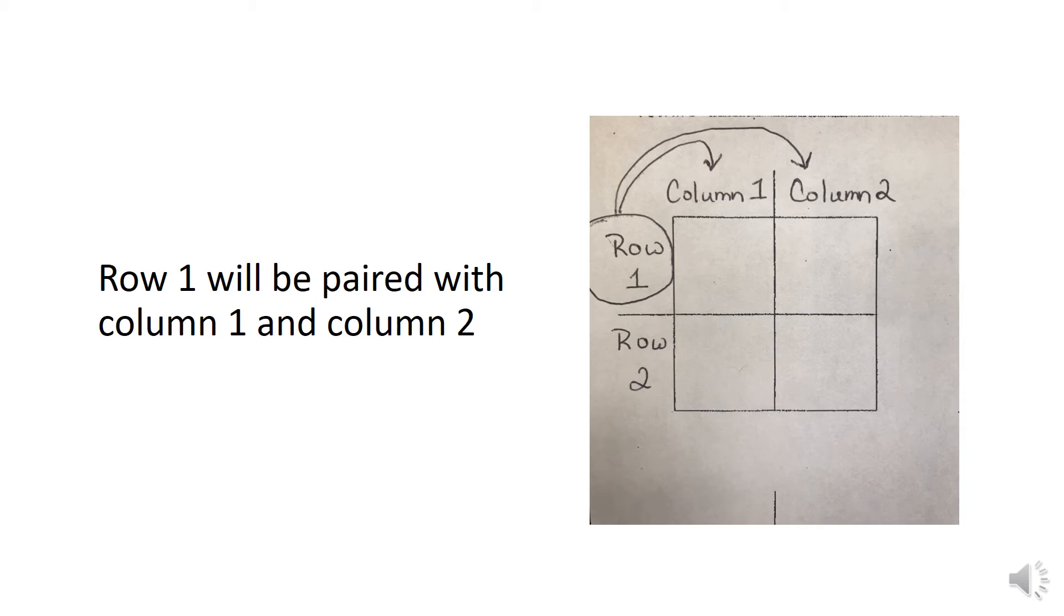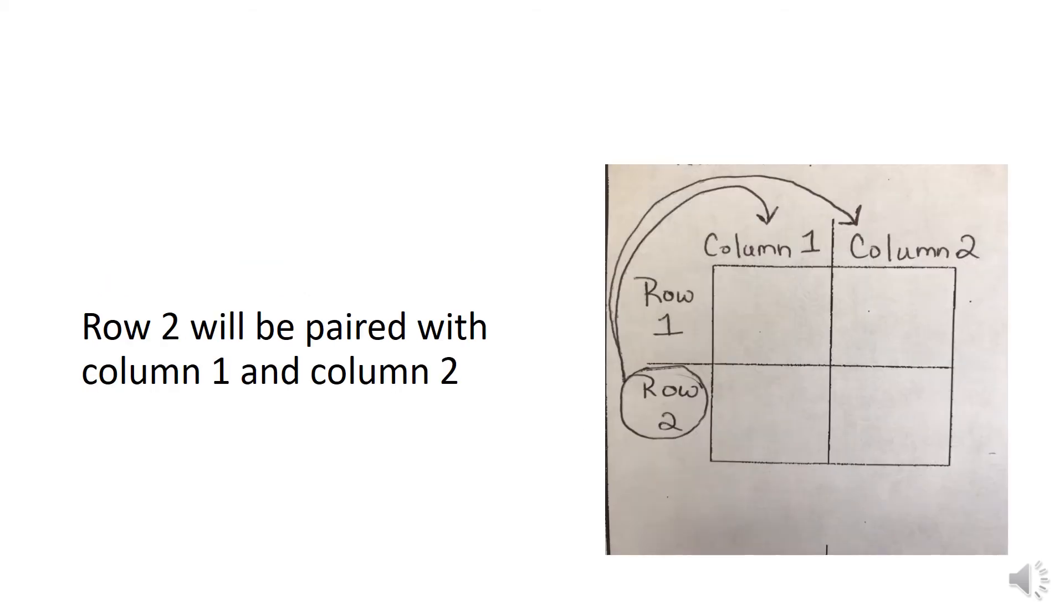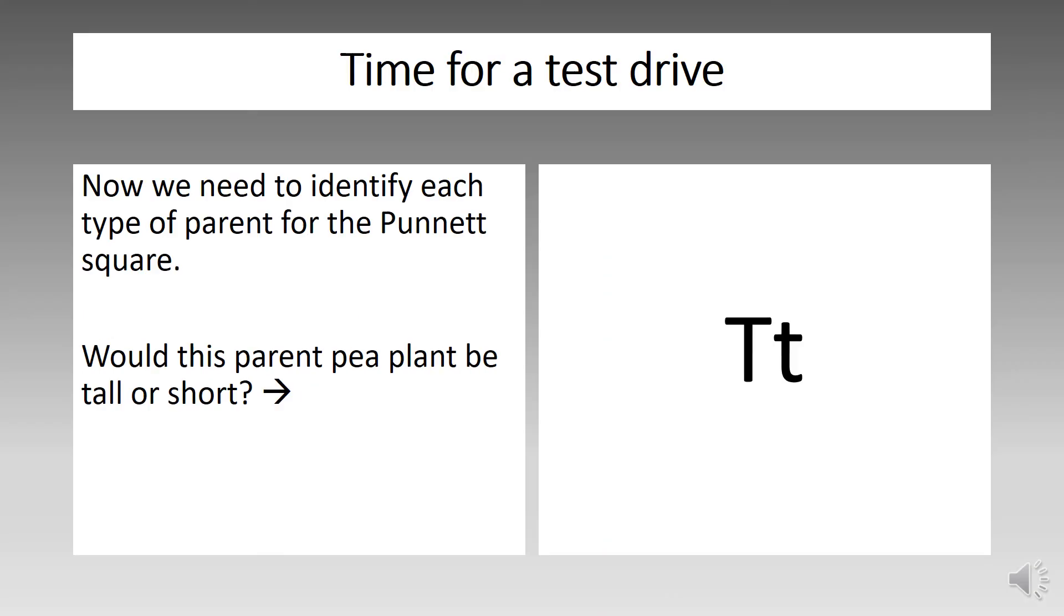To complete the Punnett square, we'll have to pair row one with column one and column two. Likewise, row two will also have to be paired with column one and column two. Now we need to identify each type of parent for the Punnett square.